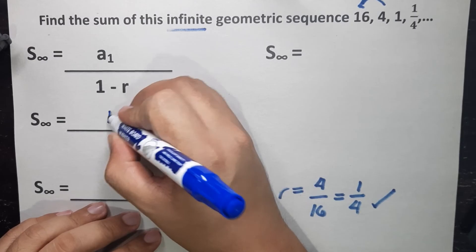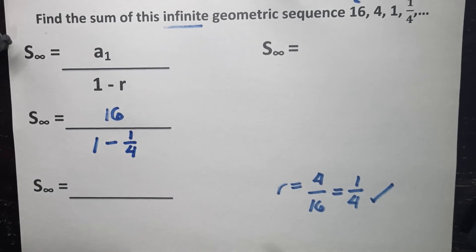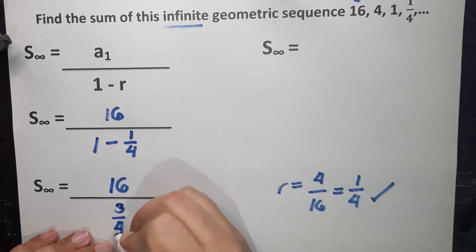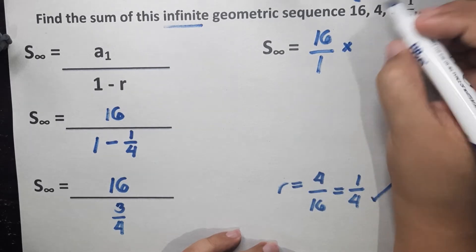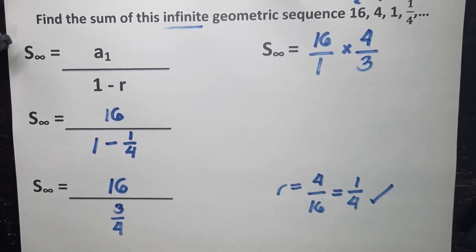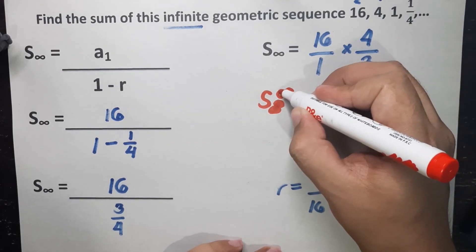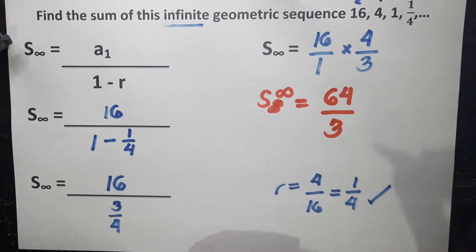Let's go ahead and use the formula now. First term is 16. 1 minus 1 fourth. Next, 16. 1 minus 1 fourth will give us 3 fourths. Next, continue evaluating. Again, we are dividing again to another fraction. So we have to get the reciprocal. 16 over 1 times. Reciprocal of 3 fourths is 4 over 3. And then we will apply the law of multiplication of fraction. So sum of infinity is equal to 16 times 4 gives us 64 over 1 times 3 will give us 3. So this cannot be reduced anymore to a whole number.